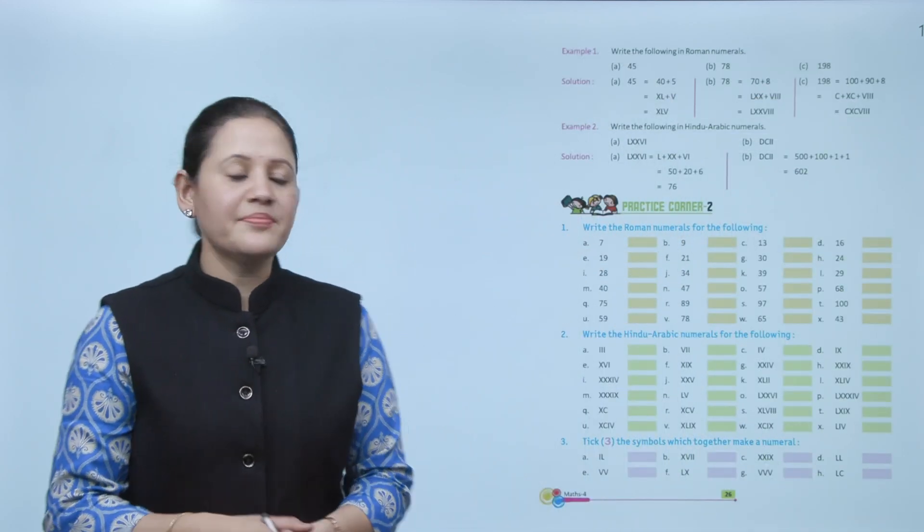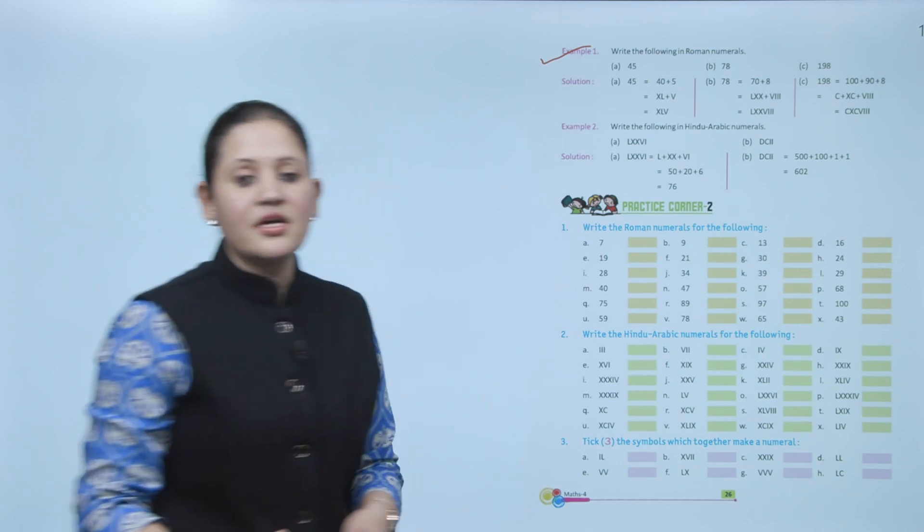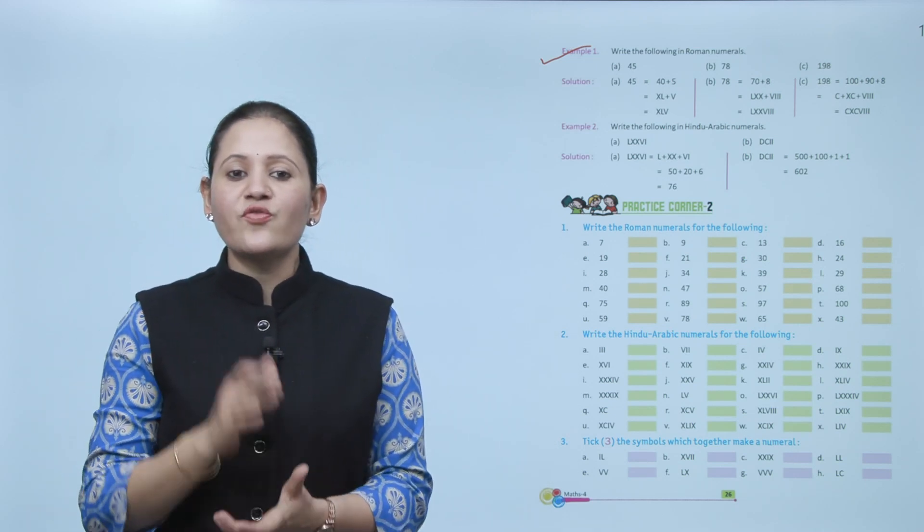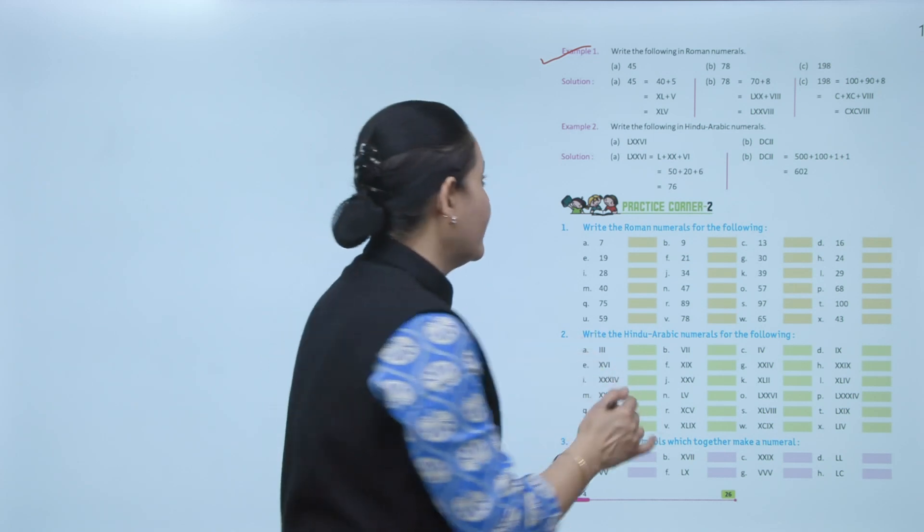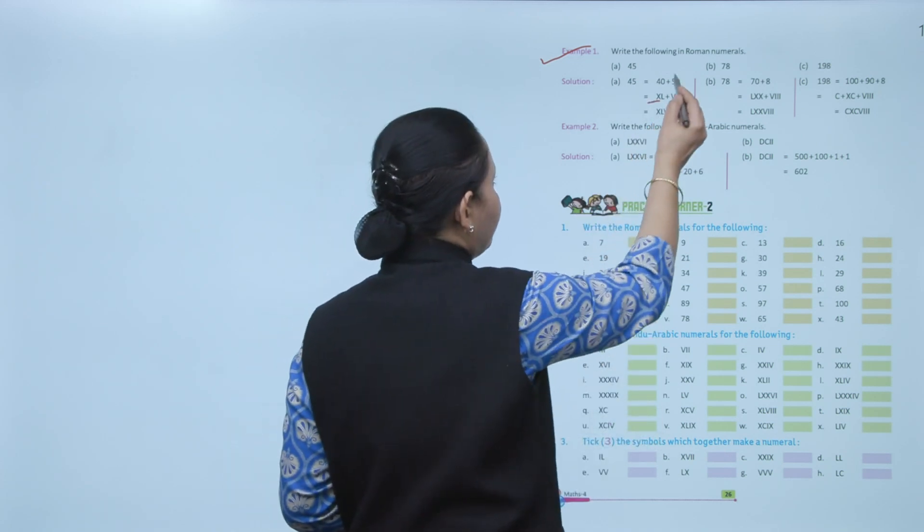Now I'll take an example. Write the following Roman numeral: 45. So 40 will be written XL, that is 40, and for 5 we'll write V. So XLV, that is for 45. Next is practice corner 2.